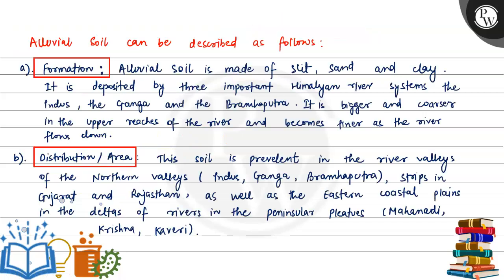Now let's see the characteristics of alluvial soil. The first point is formation. Alluvial soil is made up of silt, sand, and clay. It is deposited by the three important Himalayan river systems — Indus, Ganga, and Brahmaputra. It is bigger and coarser in the upper reaches of the river and becomes finer in the lower region as it flows down.